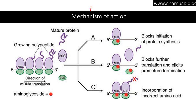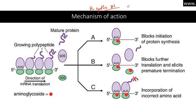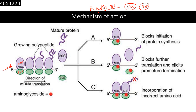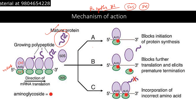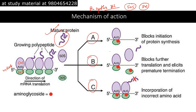The mechanism of action for aminoglycosides — in simple terms, they are protein synthesis inhibitors. For inhibition of protein synthesis in bacteria, there are two different subunits of the ribosome: the 50s and 30s subunit. When an aminoglycoside antibiotic is present, it can cause three different effects: A, B, and C.